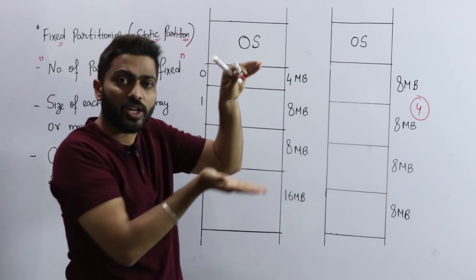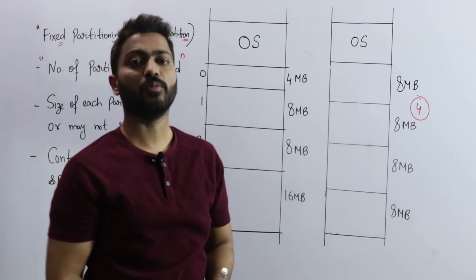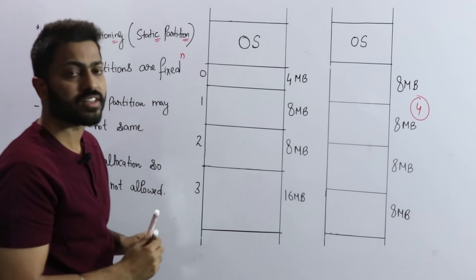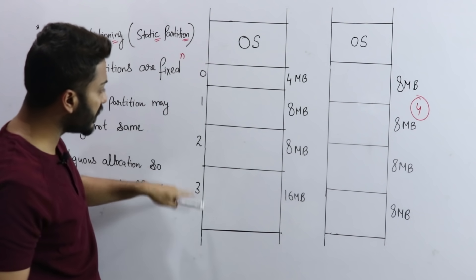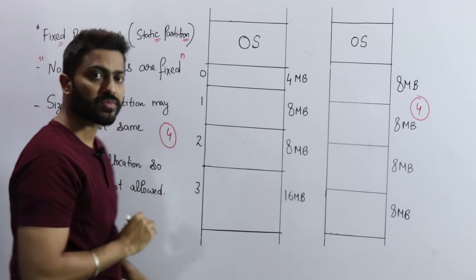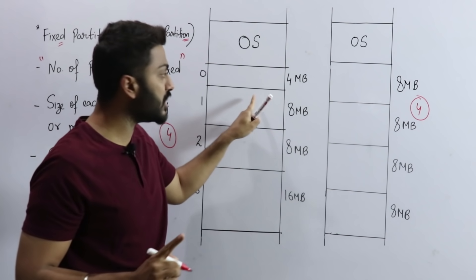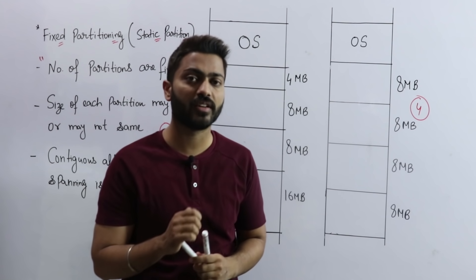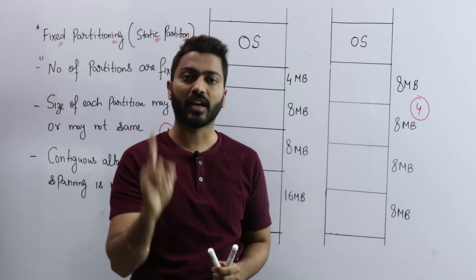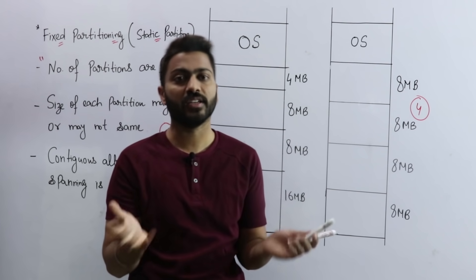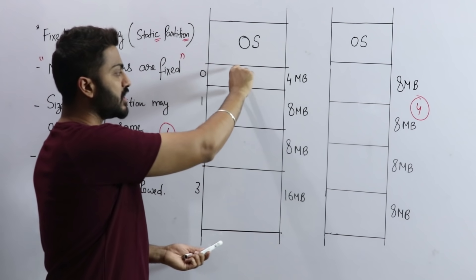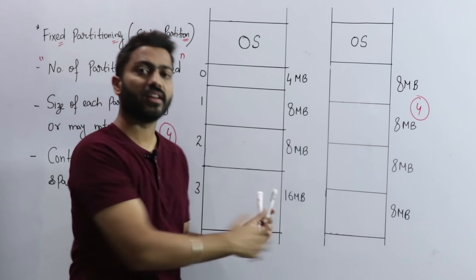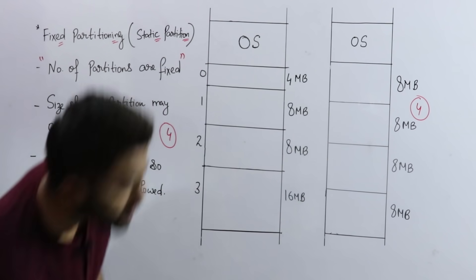We will examine processes whose size is 8MB or less. The second diagram represents another scenario — number of partitions is also fixed at 4 (numbered 0, 1, 2, 3), but here the size of each partition is different: 4MB, 8MB, 8MB, and 16MB. In fixed partitioning, the number of partitions is decided upfront, but sizes can be equal or unequal. We'll examine how processes work here and discuss the pros and cons.